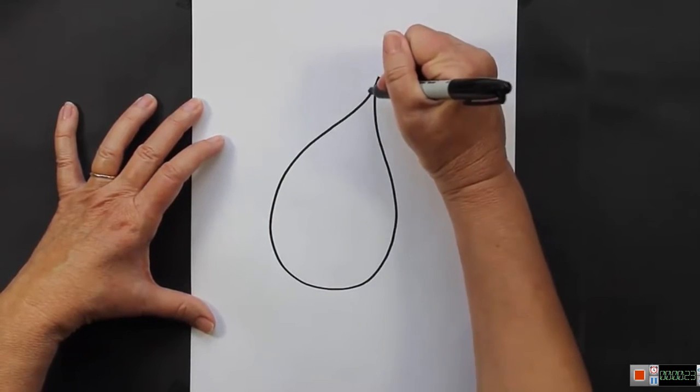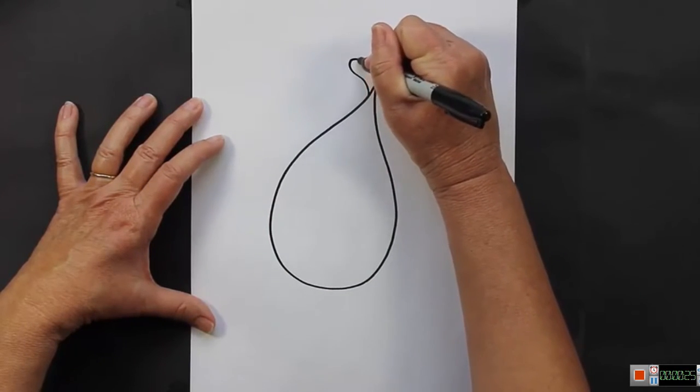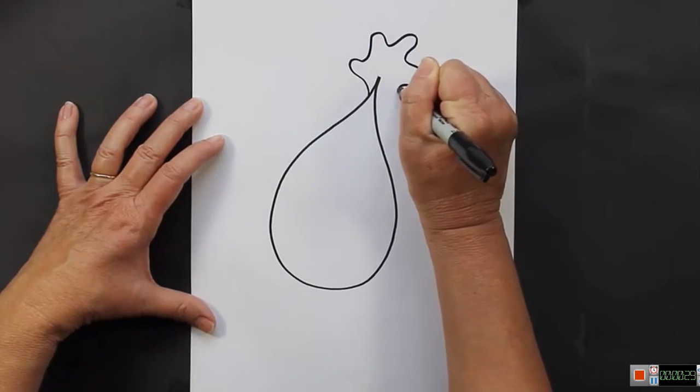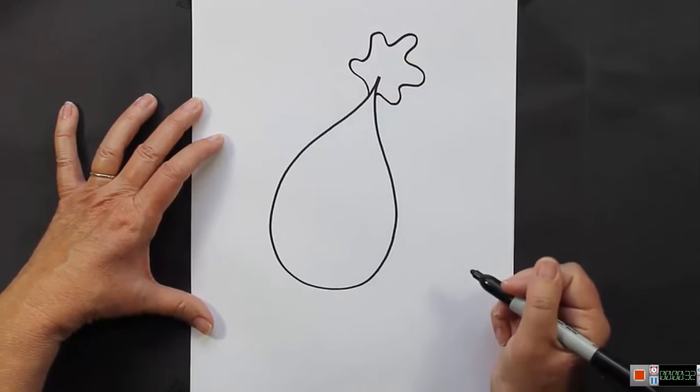At the top of the point, we're going to make a shape that looks like this. It's kind of in and out, kind of flowy. This is going to be his back fin.